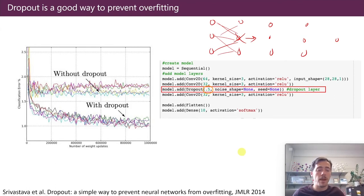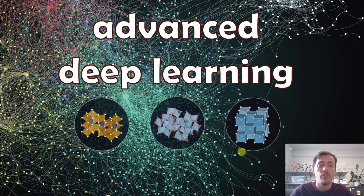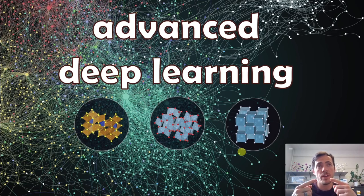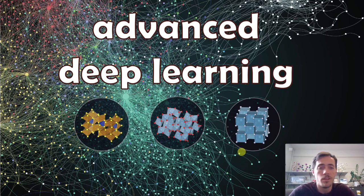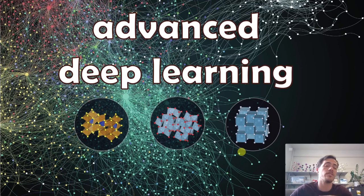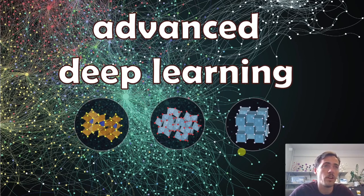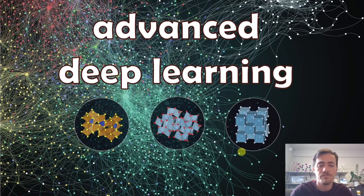We covered the basics of vanilla neural networks: what they're good for, how they work, and backpropagation as the way to update weights and biases to minimize a cost function. But there's so much more they can do. In our next video we'll dive into advanced deep learning — convolutional neural networks and recurrent neural networks — and after that we'll cover generative adversarial networks, transformers, variational autoencoders, and more variations on this theme.